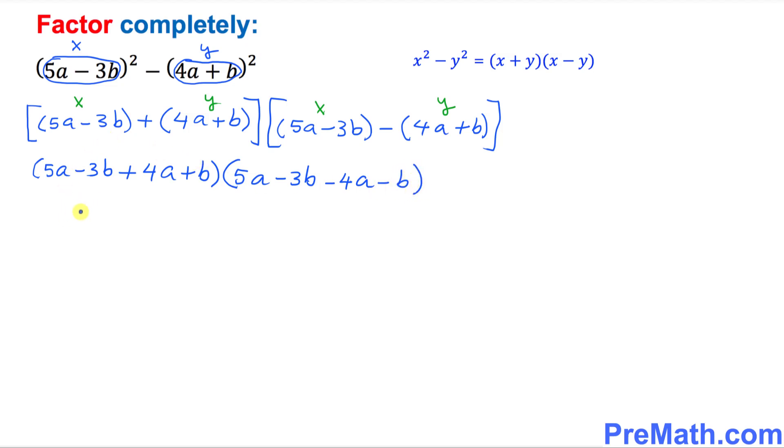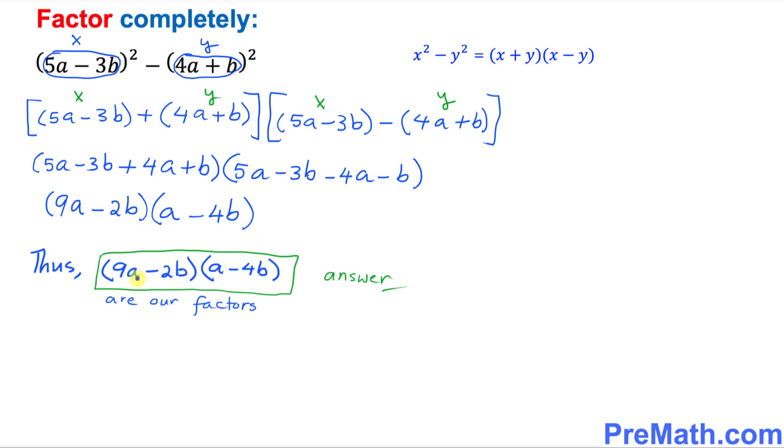Let's combine the like terms and simplify it. So 5a plus 4a is going to become 9a, and this becomes minus 2b, times 5a minus 4a is going to be simply a minus 4b. So these are our factors. Thus, (9a minus 2b) times (a minus 4b) is our answer.